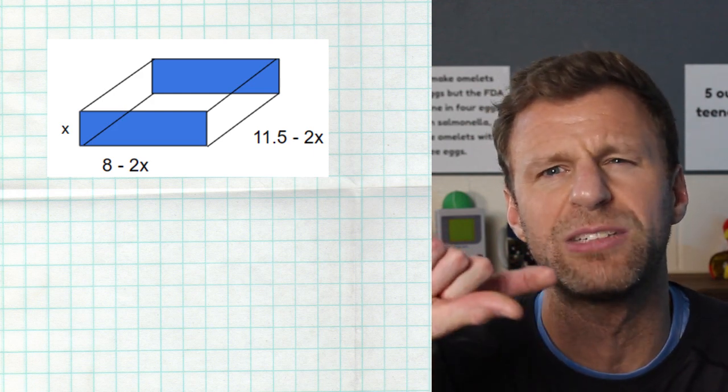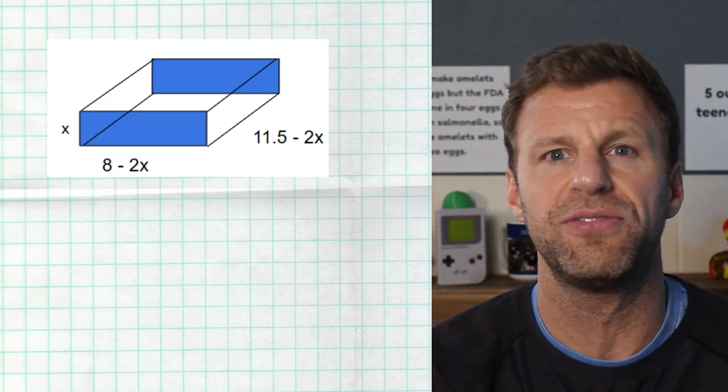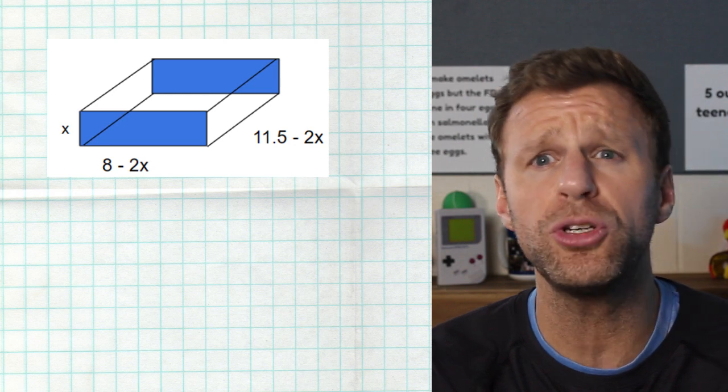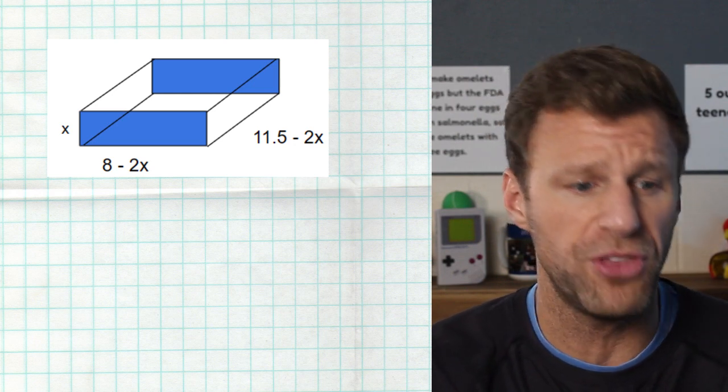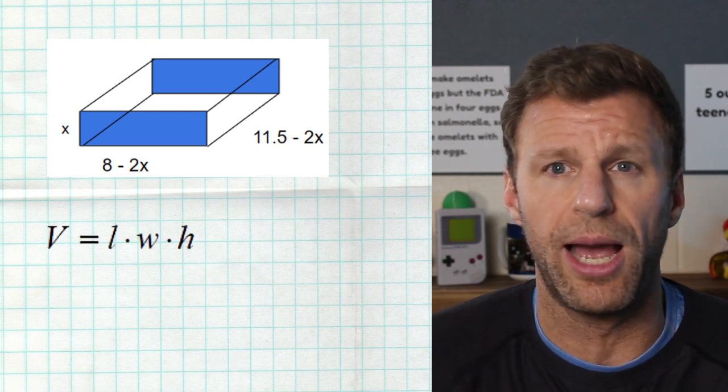Then the height of the box is going to be x. Because remember, we cut out x, and when we fold that edge up, the height of the box is now that x value. So if we want to model the volume of this box, we have to remember the volume formula. The volume formula is length times width times height.